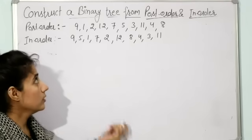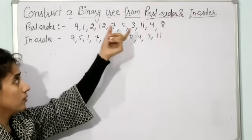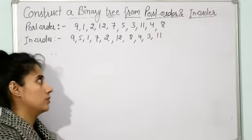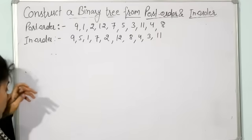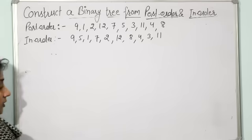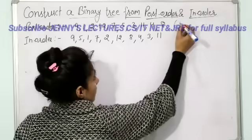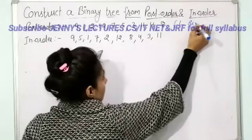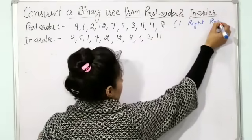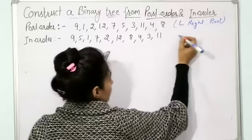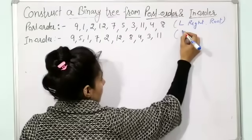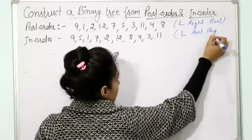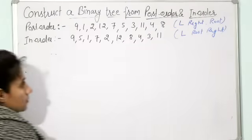The next question is: construct a binary tree from the given post-order and in-order traversal. Post-order traversal is left, right, and then root. In-order is left, root, and right.